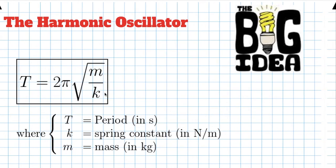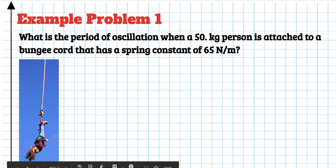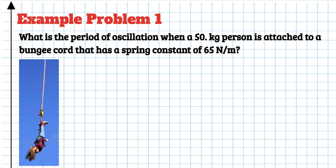Let me solve two examples. The first is a bungee jumper: a person has 50 kilograms of mass and is attached to a bungee cord with a spring constant of 65 newtons per meter — meaning you need 65 newtons of force to stretch it one meter. If they're just hanging at equilibrium, but if you lift them up or pull them down, they will oscillate back and forth — it's basically a mass on a spring.